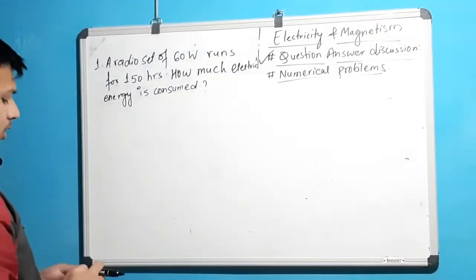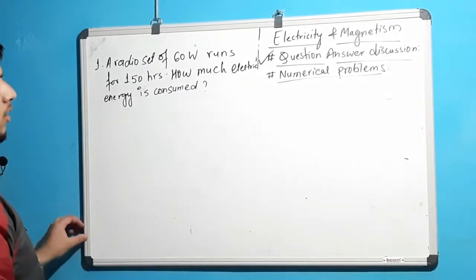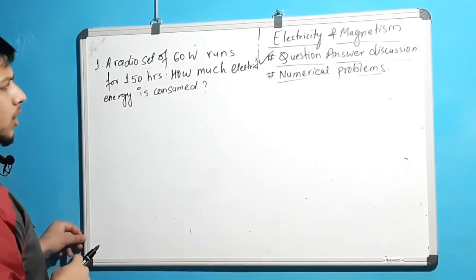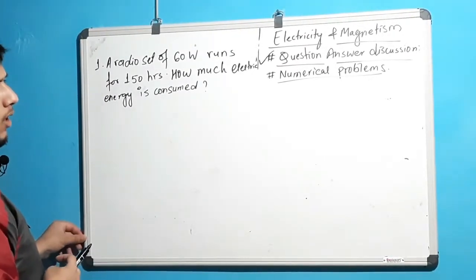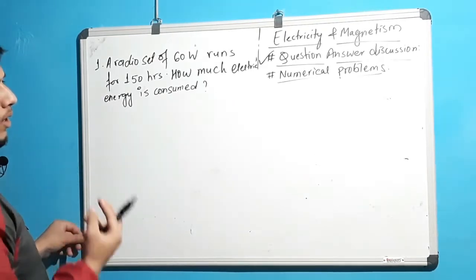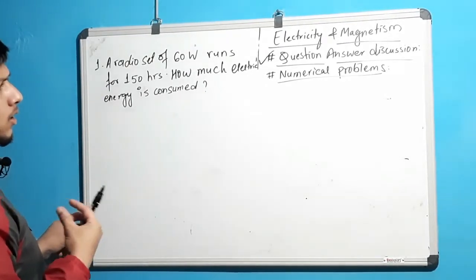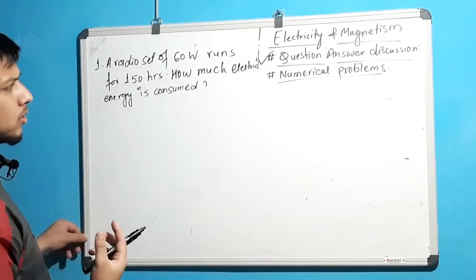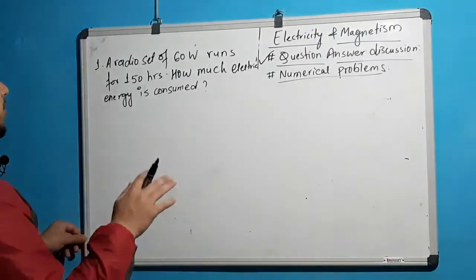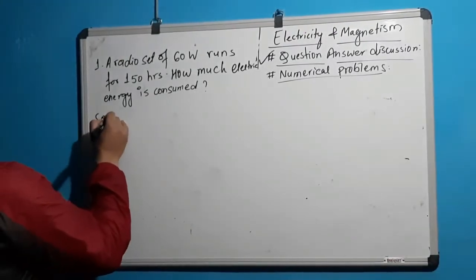When we run some electric appliances, they consume electrical energy and convert it to a different form. When we use an electric motor, it uses electrical energy and converts it into mechanical energy. When we use a radio set, it converts electrical energy into sound, and some energy is lost in the form of heat.